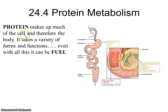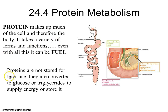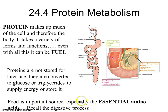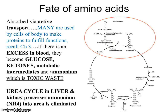Proteins make up much of the cell and therefore the body, taking a variety of forms and functions. At least two hundred thousand different proteins are made by the human body, and they can also be used as fuel. Proteins are not stored for later use — they are either converted into something like hemoglobin, elastin, collagen, actin, or myosin, or reorganized into a glucose molecule or fat to store energy. There are essential amino acids that your body cannot make and must obtain from your diet.